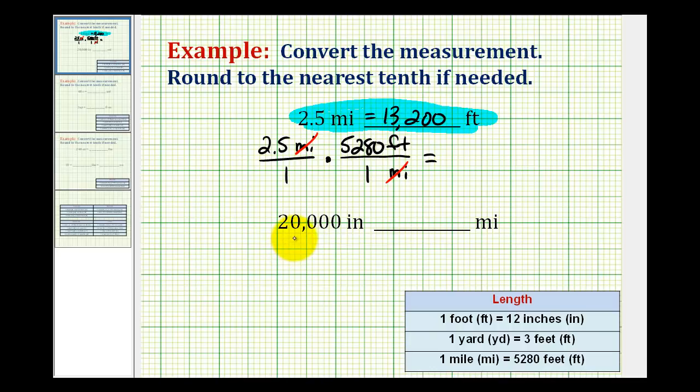In the next example, we want to convert 20,000 inches to miles. Notice there's not a direct conversion in our table from inches to miles, which means we'll have to have more than one unit fraction.